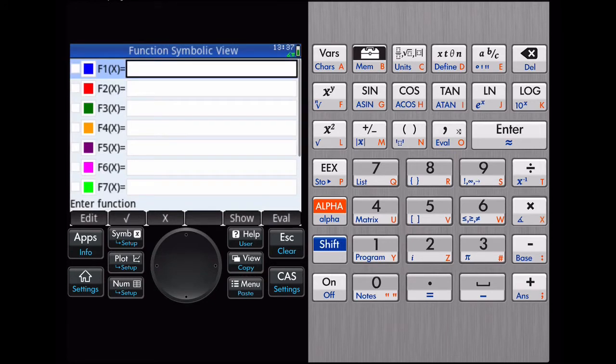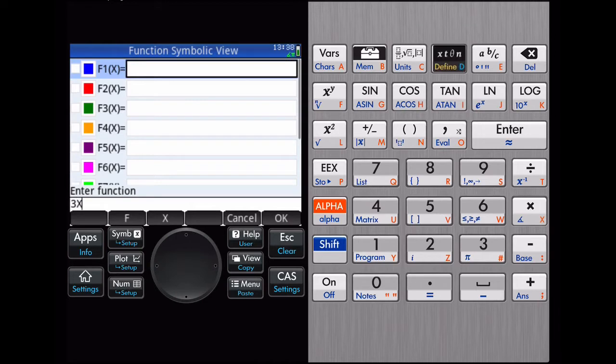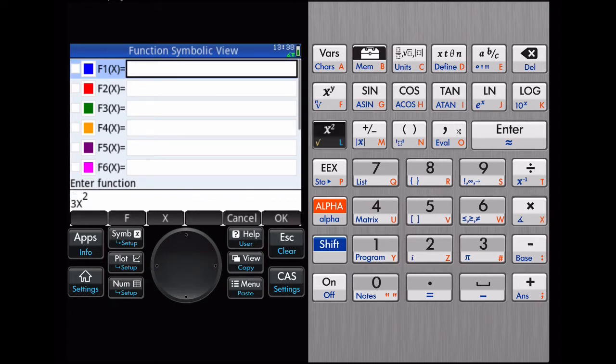From here we're going to type in 3, x is on your touch screen, or you can just hit this key right here with the x on it. And then squared is going to be right here, above the eex or diagonal of the 7. Now hit enter.